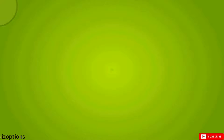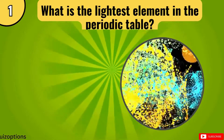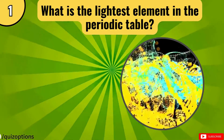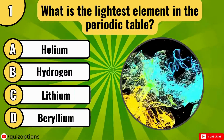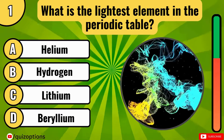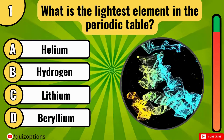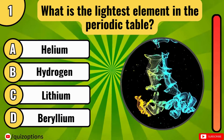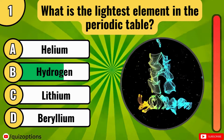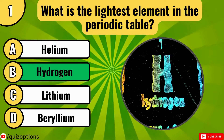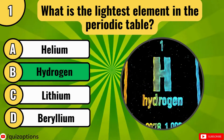Here is the first question for you. What is the lightest element in the periodic table? The answer is option B. Hydrogen is the lightest.